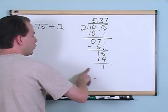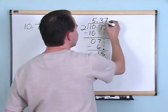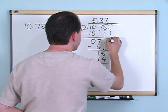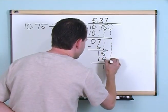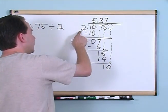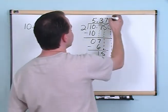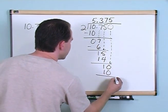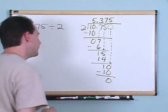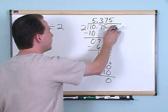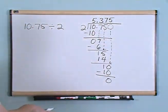Can 2 go into 1? Well no it can't, but don't forget that with decimals you're going to have to start adding 0s — you always need a remainder of 0. So let's drag a 0 down. Can 2 go into 10? Yes it can, 5 times. 5 times 2 gives me 10. 10 minus 10 gives me 0. No more digits to drag down, so I'm done. The answer is 5.375.